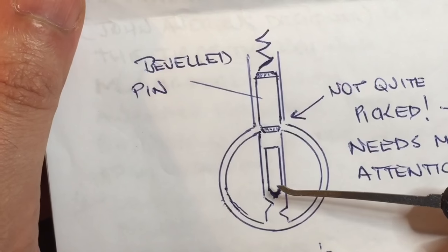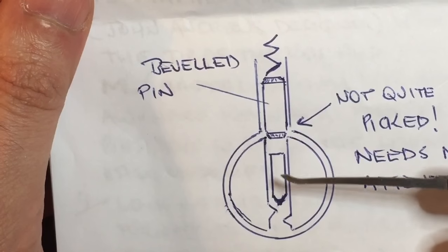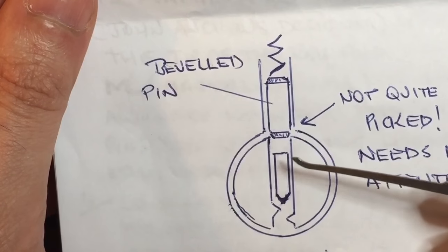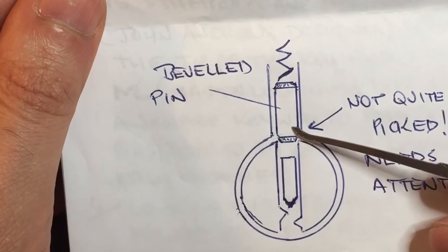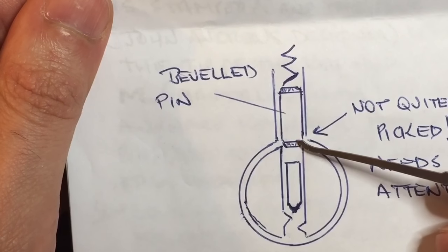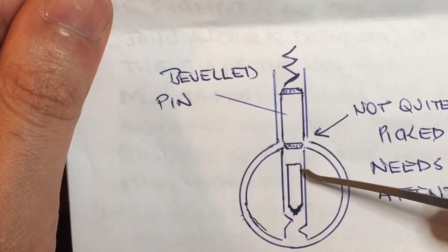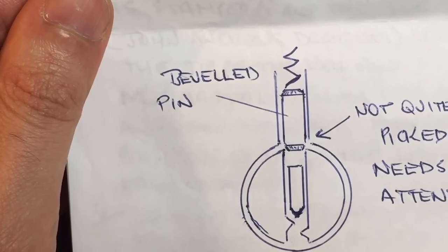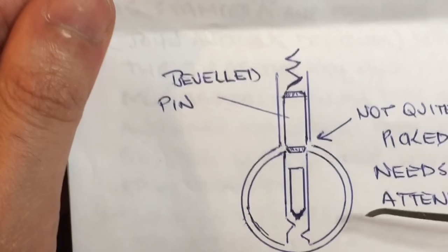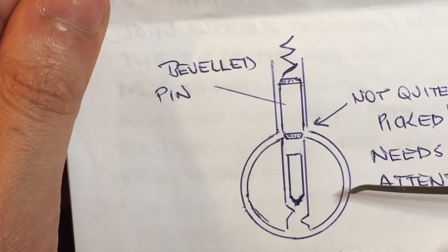The tapered key pins work in the exact same way but in reverse. The tapered pins make it very easy to over set. They'll wedge up into the shear line and because the tolerances are so good on these Lockwoods they will stay there. So what that means is that as a part of our picking process we need to regularly check for over set pins.